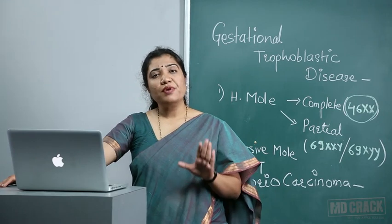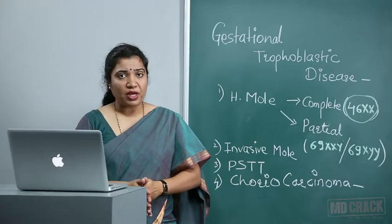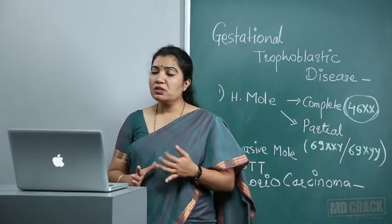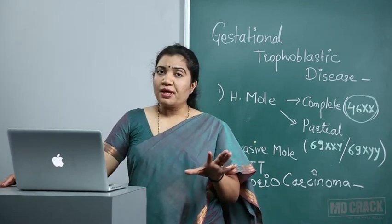Complications of the evacuation procedure include acute pulmonary insufficiency from embolism of trophoblastic tissue dislodged during suction, and thyroid storm — presenting as hyperthermia, delirium, convulsions, and sudden cardiovascular collapse due to increased TSH-like HCG action. Preparation includes having blood ready, giving beta-blockers, being prepared for embolism or thyroid storm, and evacuating gently with care due to high perforation risk.